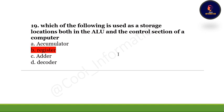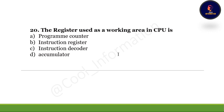The last question: The register used as a working area in the CPU is — option A, program counter; option B, instruction register; option C, instruction decoder; option D, accumulator. The correct option is option D, which is accumulator. This is all for today's session.